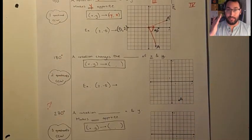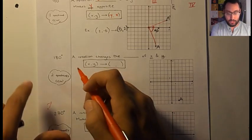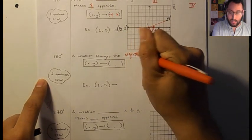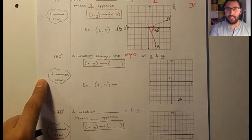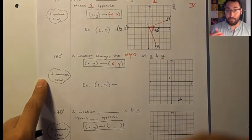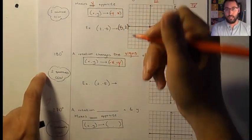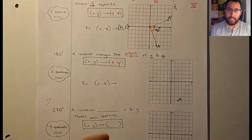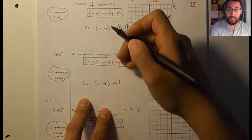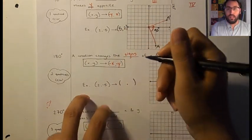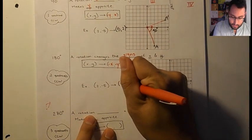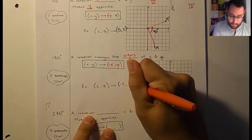For rotating 180 degrees, it forms a straight line, but the rule here, a rotation changes the signs of X and Y. So X and Y over here, what that becomes, I'm just going to rewrite X and Y, but since it changes both those signs, I'm going to put a negative X and a negative Y, meaning both will be the opposite. So for this, we still have the same point that we're starting with two negative five. I'm going to make it the opposite of positive two. That becomes negative two and the opposite of negative five becomes positive five.